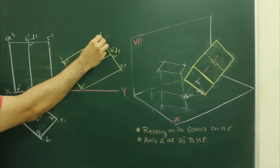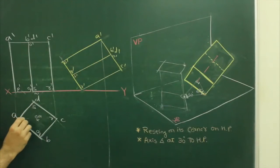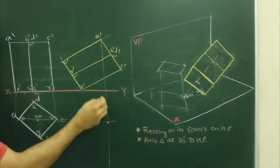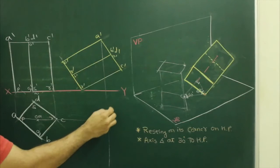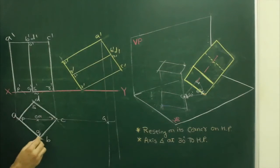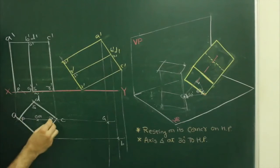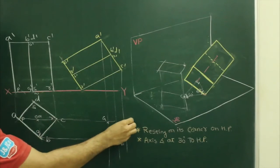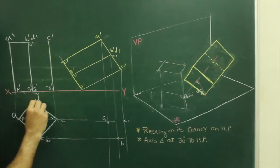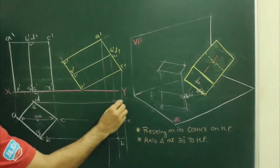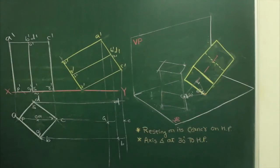Now we will project A dash from here and A from here, so get A. B dash from here and C dash from here. Same way, D dash from here and D from here, so get D.